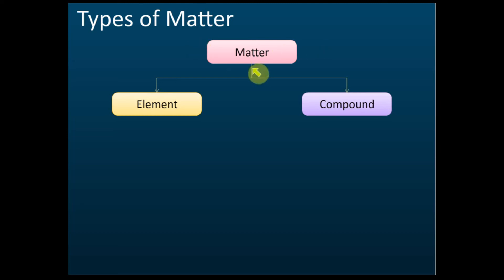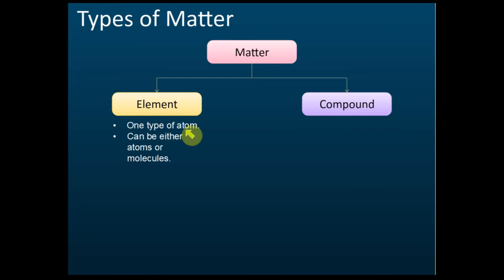Types of particles: we have atoms, molecules, and ions. Now for matter, we divide it into two types — the first is called elements and the second is called compounds. Elements contain just one type of atom, and they can be either atoms or molecules.